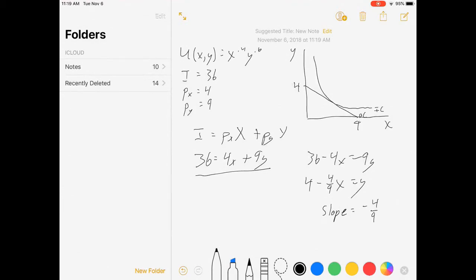Now, that slope will always be minus px over py. No matter what numbers I plug in, you can always remember that. Or you can actually solve for it all the way if you want to. But either way, the slope of it is minus 4 ninths. All right, next, we need the slope of our indifference curve.